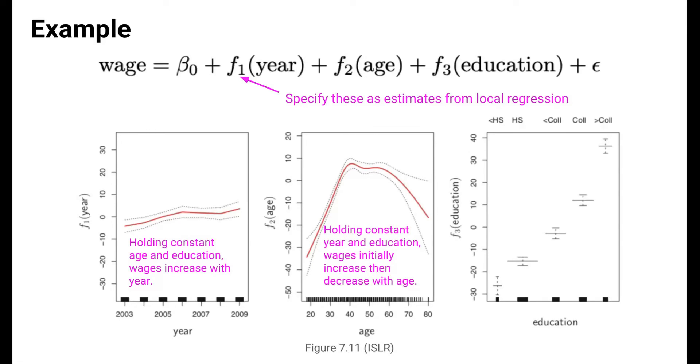The middle plot shows the relationship between wages and age, holding constant calendar year, and an individual's education level. We see that, on average, individuals in a fixed year and with a fixed education level see an initial increase in wages with age, followed by a decrease.